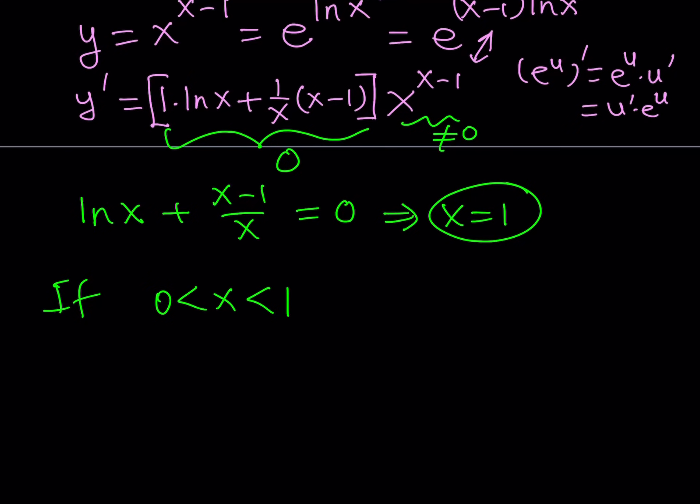If x is less than 1 and greater than 0, ln x is going to be negative, as you know. If you consider the graph of ln x, you'll see what I'm talking about. And then what about the other piece? If x is between 0 and 1, x minus 1 over x is also going to be negative. Therefore, their sum is also going to be negative, which means that y prime is going to be less than 0.